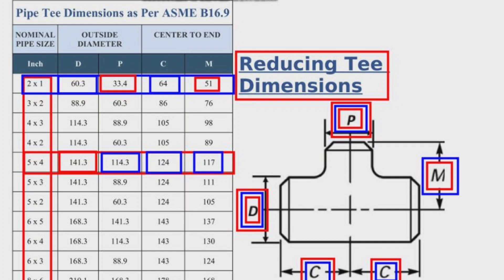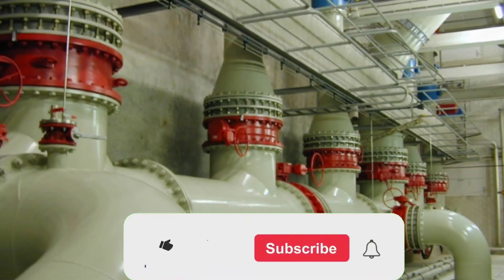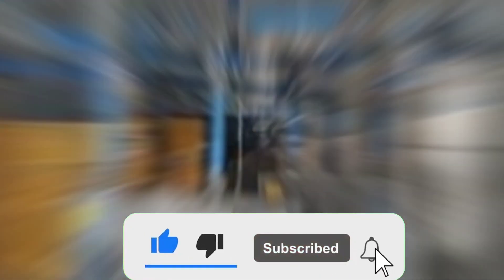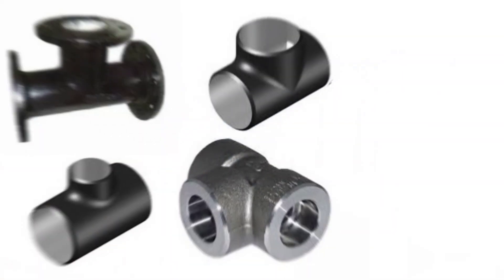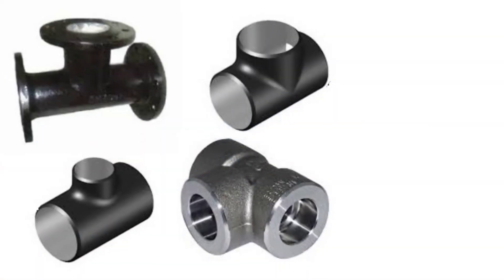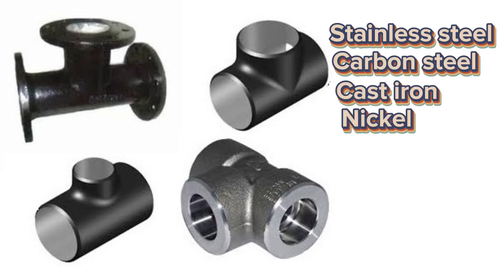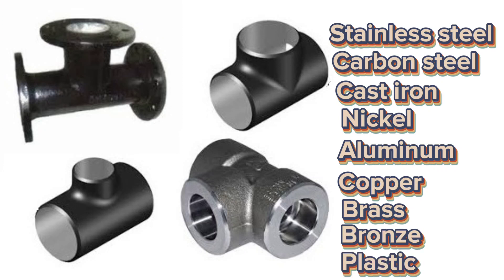You can also determine the size of the tee you want by referring to these tables. A variety of pipe tees are mostly used in industrial applications such as chemical processing pipelines, petroleum, gas compression units, refineries, etc. These can be fabricated with various materials such as stainless steel, carbon steel, cast iron, nickel, aluminum, copper, brass, bronze, plastic, and more.